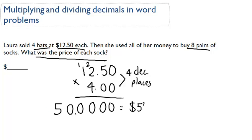And that gives us a total of $50. That's the amount of money that she made. And then she went ahead and bought eight pairs of socks with that $50.